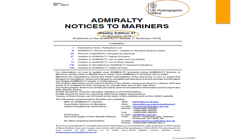This example is from 2019, Week 47. The date of issue is shown as 21 November 2019; however, it was published on the Admiralty website on 11 November 2019. So if you have internet access on board, you could have accessed it on 11 November itself, while the paper publication was issued on 21 November 2019.